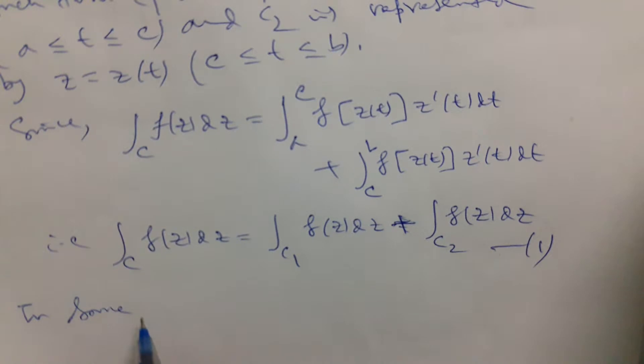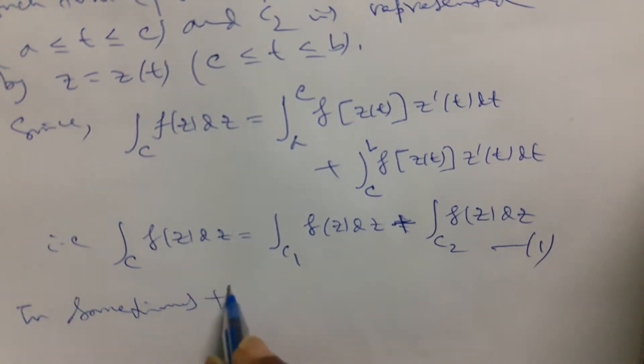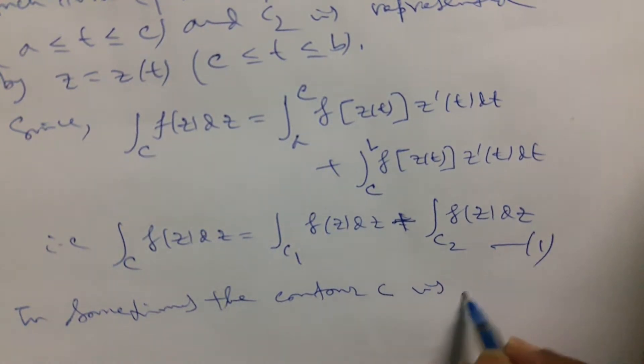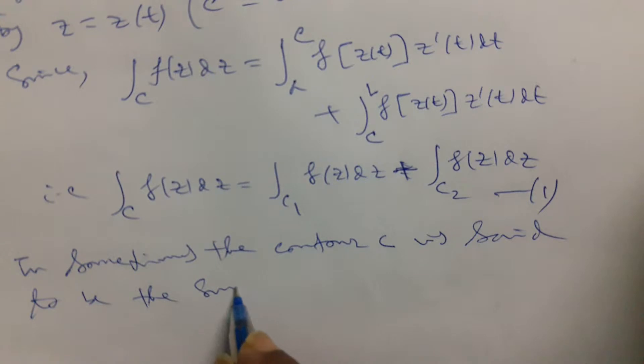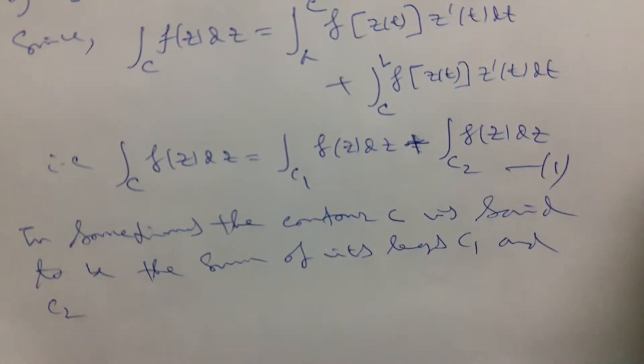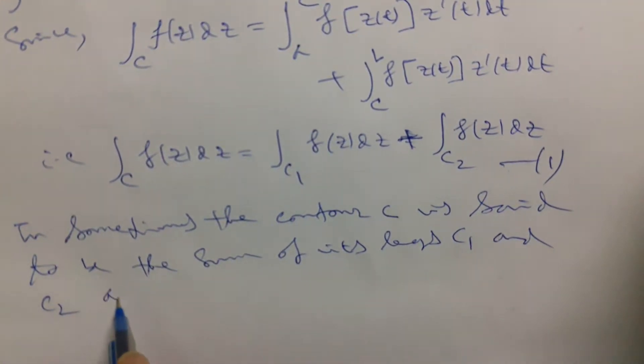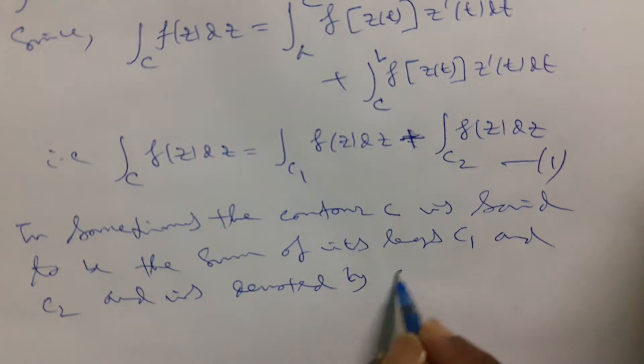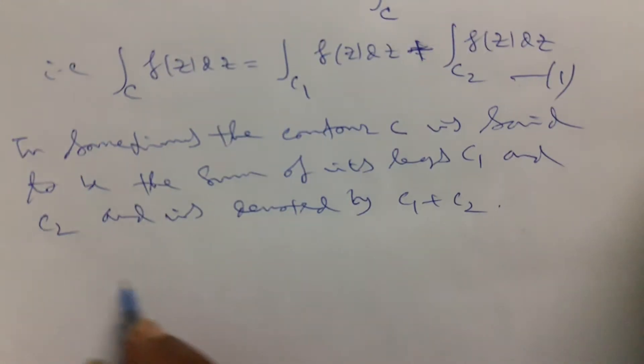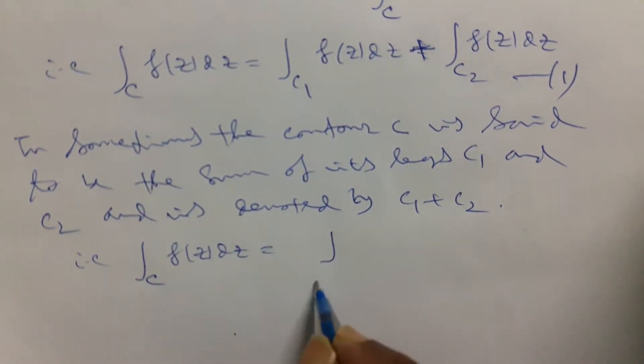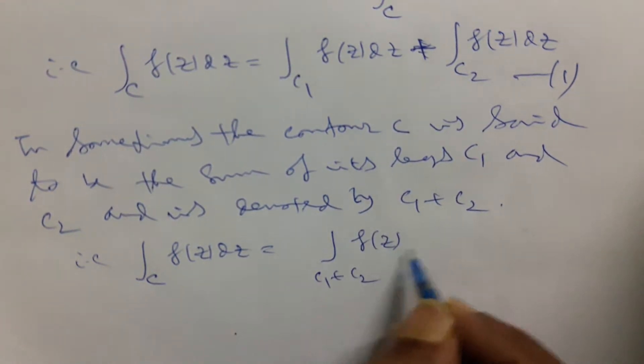In some cases, the contour C is said to be C1 and C2, and is denoted by C1 plus C2. That is, the integral over C of f(z)dz can be denoted by the integral over C1 plus C2 of f(z)dz.